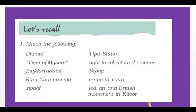First one: Match the following. Column A contains: Diwani, Tiger of Mysore, Faujidari Adalat, Rani Channamma, Siphai. Column B contains: Tipu Sultan, right to collect the tax (land revenue), Siphai, criminal court, led anti-British movement in Kittur.